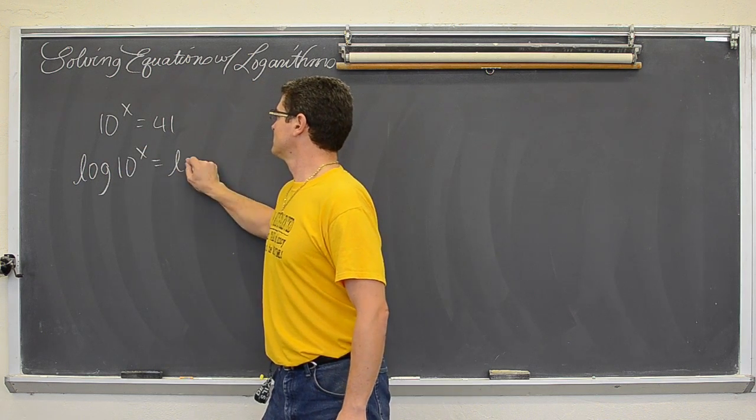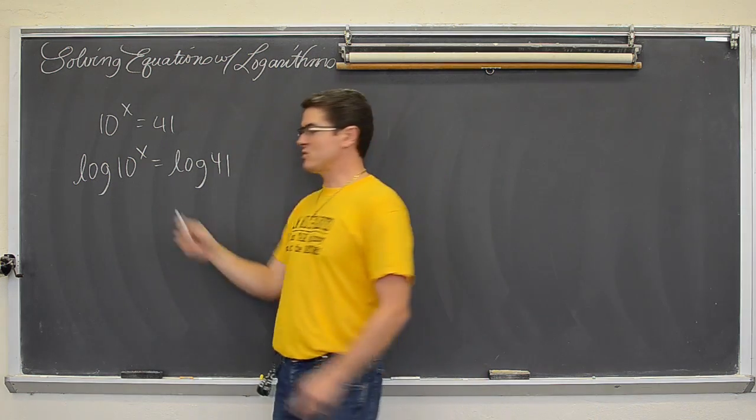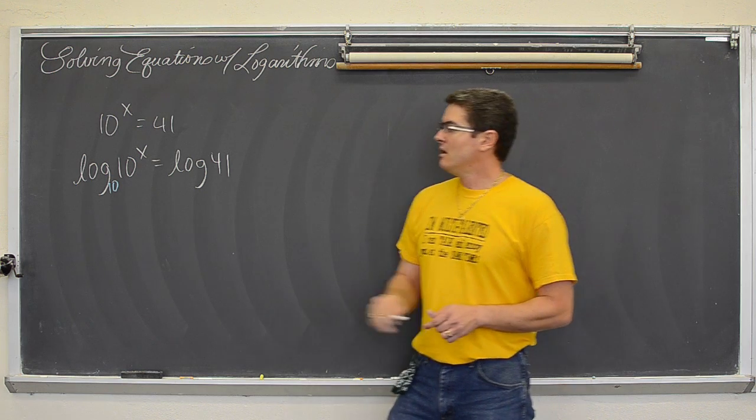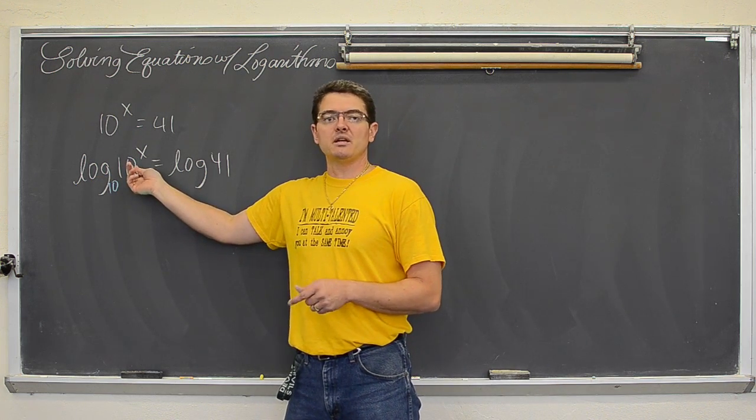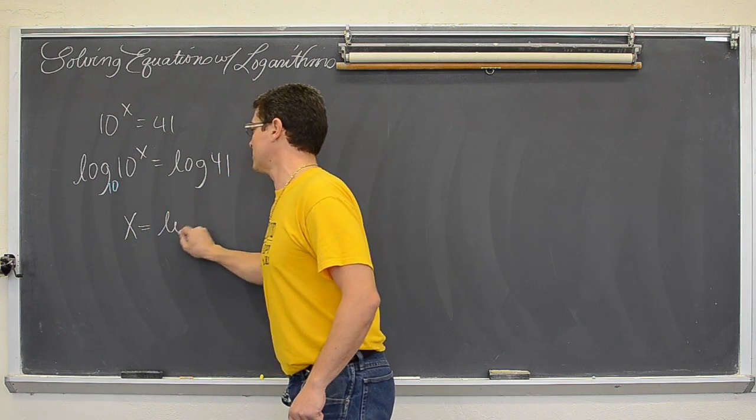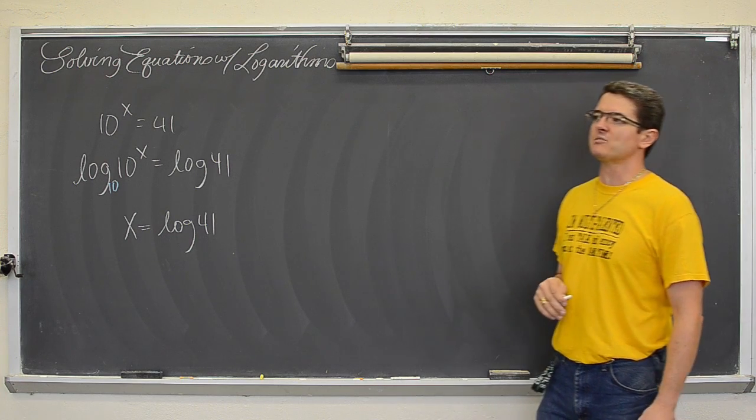then the log base 10 which we don't have to write, and if it is not written it is always implied to be 10, the log base 10 and the base 10 of the x will cancel out, the x falls down and you get x equals log of 41. Just find that button on your calculator and get the appropriate decimal.